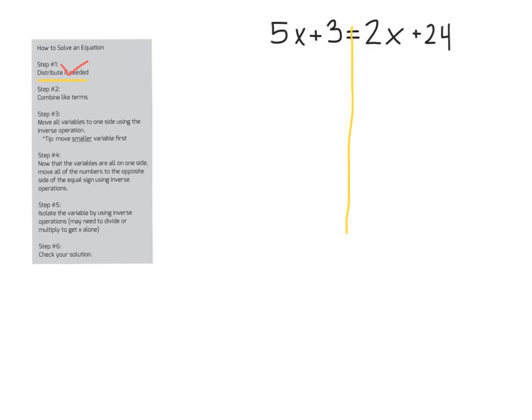Step two tells us to combine like terms. So if we have any like terms on the same side of the equal sign, we would have to combine those. But we don't have to do that on this problem because our terms are already combined. Step three tells us to move all the variables to one side using inverse operations. And this tip right here is one of the most useful things I can tell you: Move the smaller variable first. And what I mean by that is on this particular equation, you notice we have a 5x on the left side and a 2x on the right side. Which of those is smaller? Well, 2 is clearly smaller than 5.